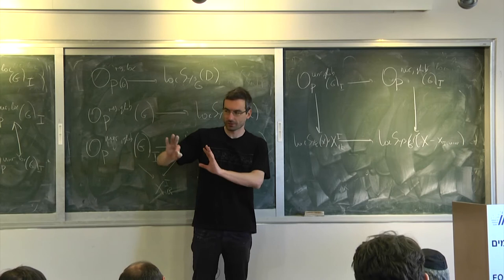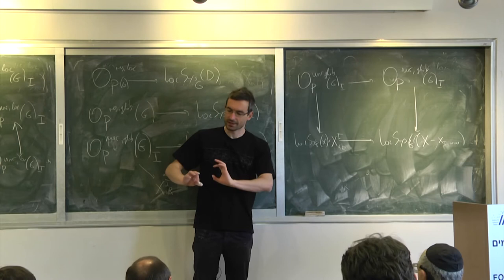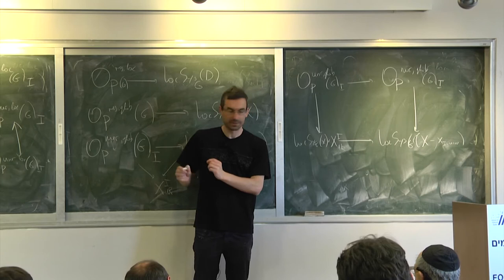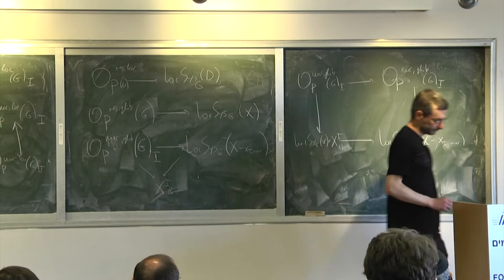Alright, we are almost ready. We have opers unramified global G times X_i dR and we have bundle with connection away from those points — a bundle with connection with the B-structures such that away from those points you have the oper condition. That's the right definition; however it's not clear this is an ind-scheme.